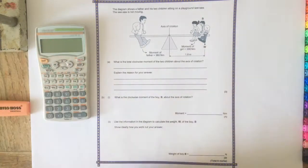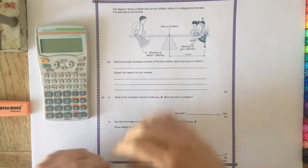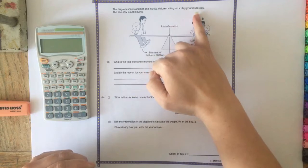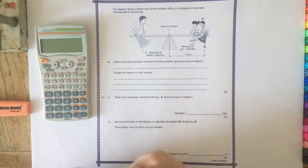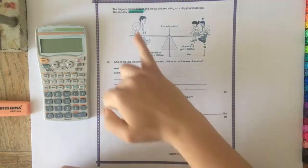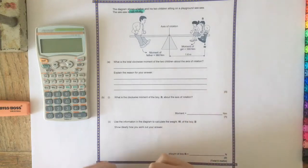Right, so let's go through the question with our highlighters to start off with. The diagram shows a father and his two children sitting on a playground seesaw. The seesaw is not moving, so that's something that is important so that we know whether it is balanced, whether it's in equilibrium or whether it is actually moving.